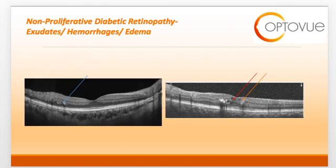Another common finding in non-proliferative diabetic retinopathy is the formation of hard exudates. A retinal exudate is really a composition of lipid material that has leaked from damaged capillaries. Hard exudates appear as hyperreflective clusters in the retina, specifically at the outer plexiform layer.